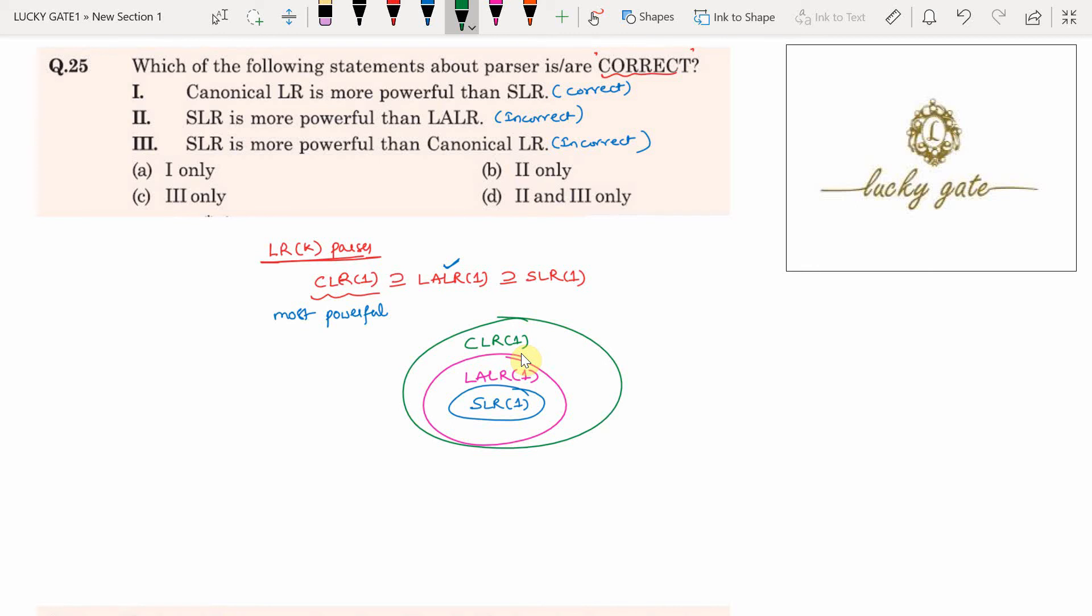The hierarchy is: SLR of 1 is least powerful, then LALR of 1, and CLR of 1 is most powerful.